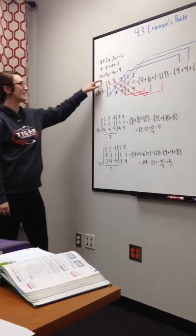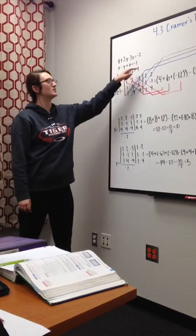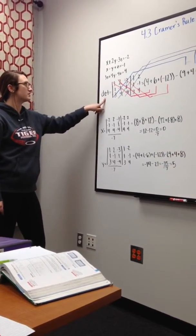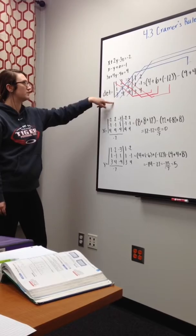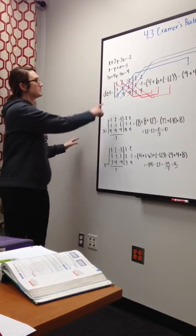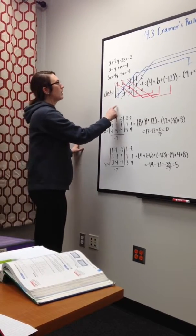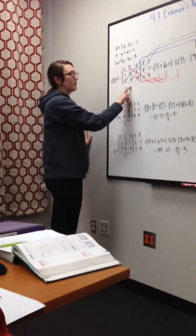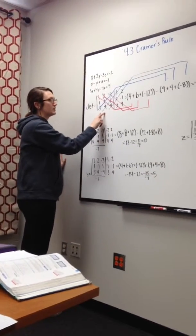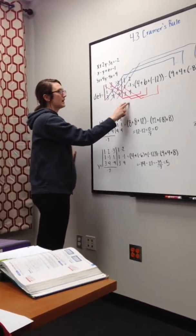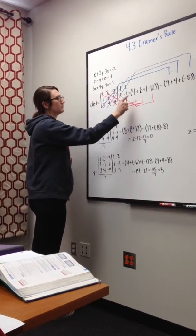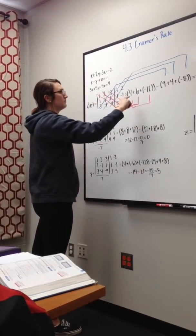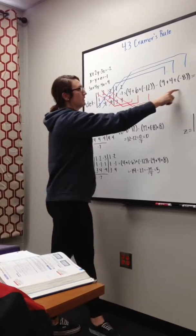Today we're finding the variables x, y, and z using Cramer's rule. First thing you have to do is find the determinant. To find the determinant, you line all of the x's up in one row, all the y's and the z. And then since it's a 3 by 3, you need to add the first two rows to the back. And you cross it all over, and when you cross everything over, you will get negative 7.